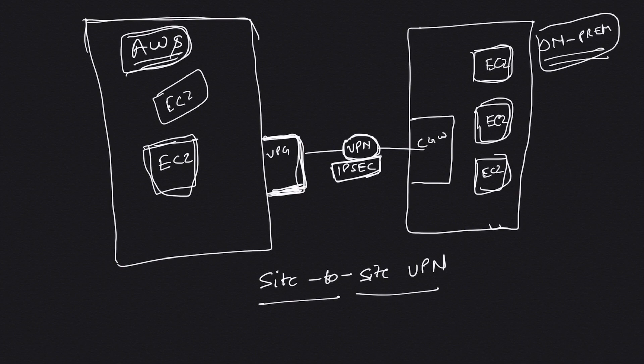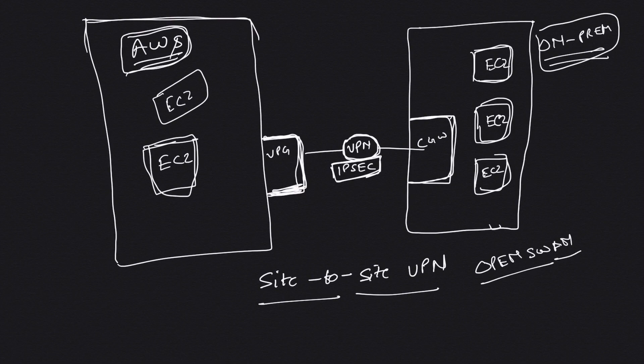We'll be setting up an IPsec VPN using OpenSwan, which is an open source VPN software, and we'll be using EC2 instances to validate that we have our VPN connection up and running. Without wasting any time, let's jump into our AWS console and set up our site-to-site VPN.